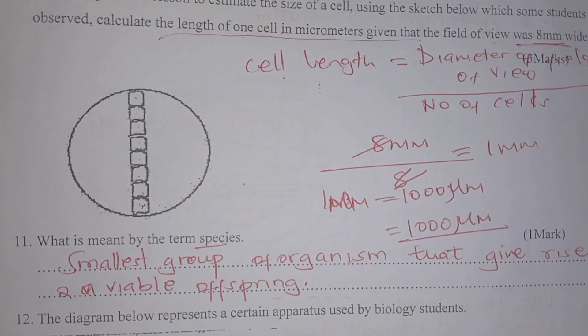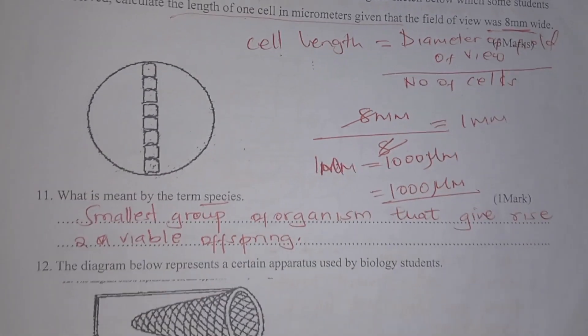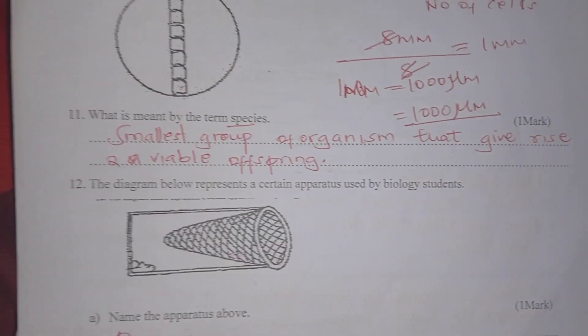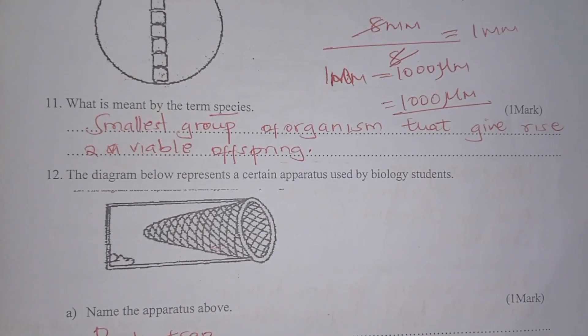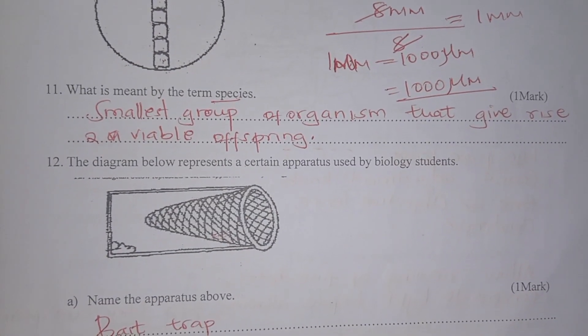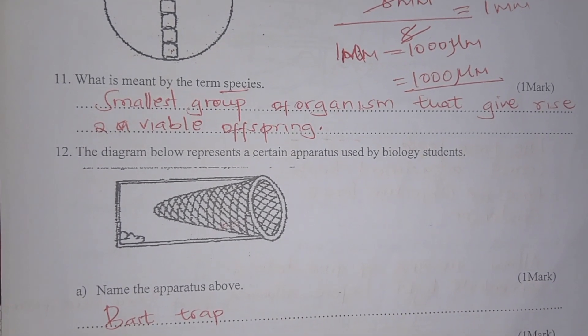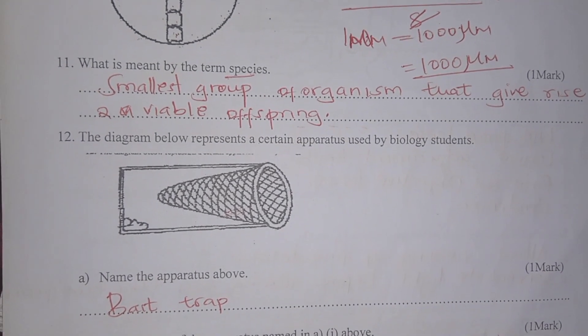The cell diameter is 1000 micrometers — that is your answer. What is meant by the term species? It is the smallest group of organisms that give rise to viable offspring.